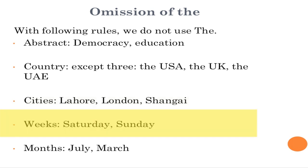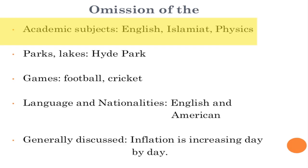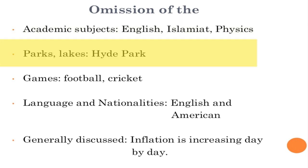Rule four: days of the week — Saturday, Sunday, Monday — we do not use 'the'. Rule five: months — in January, in February, in March, in April — we do not use 'the'. Rule six: academic subjects — 'I am speaking English', not 'I am speaking the English'. 'I am speaking French', not 'the French'. Then parks and lakes do not use 'the'.